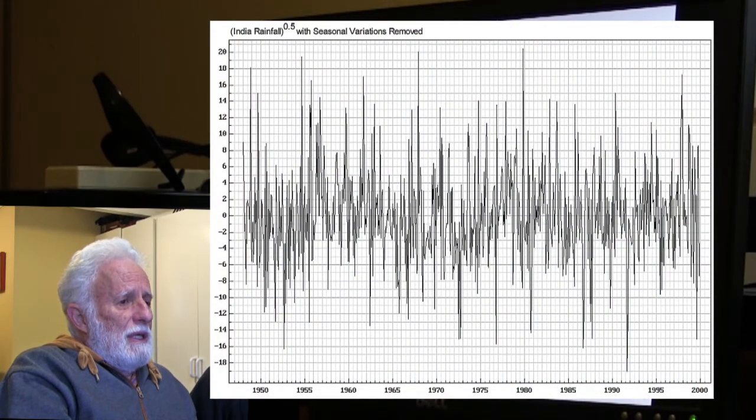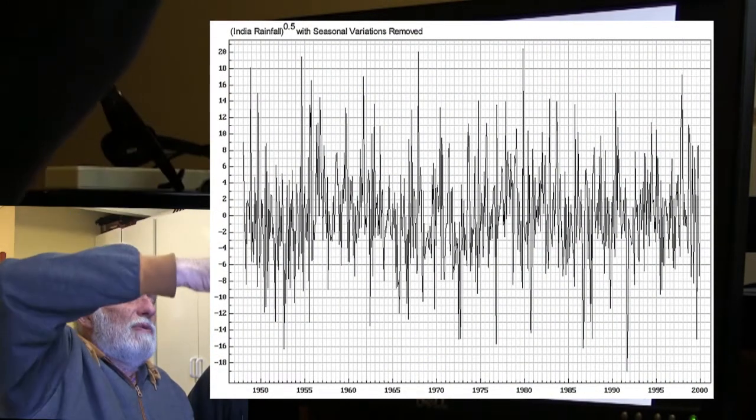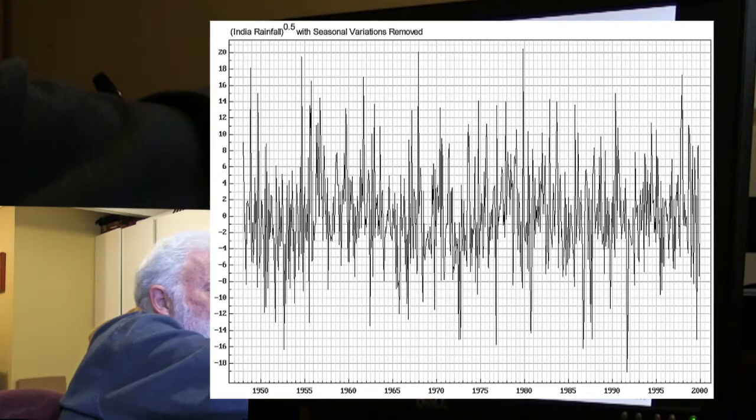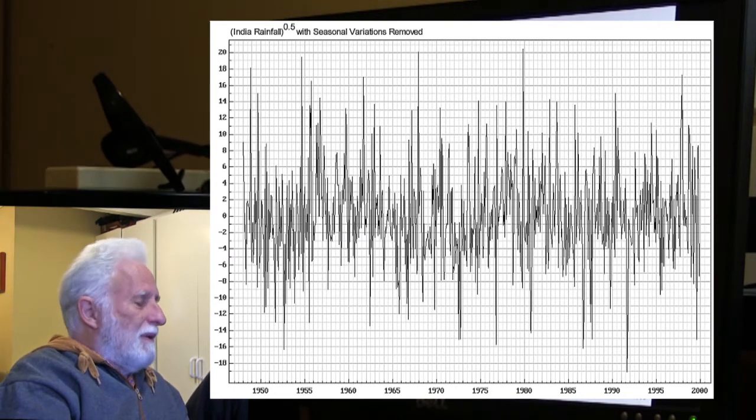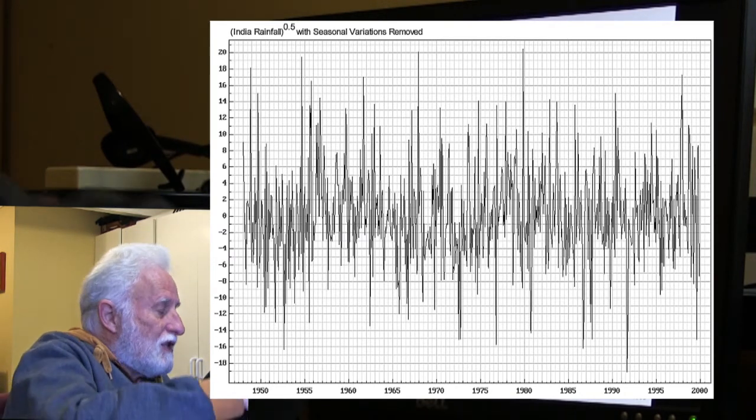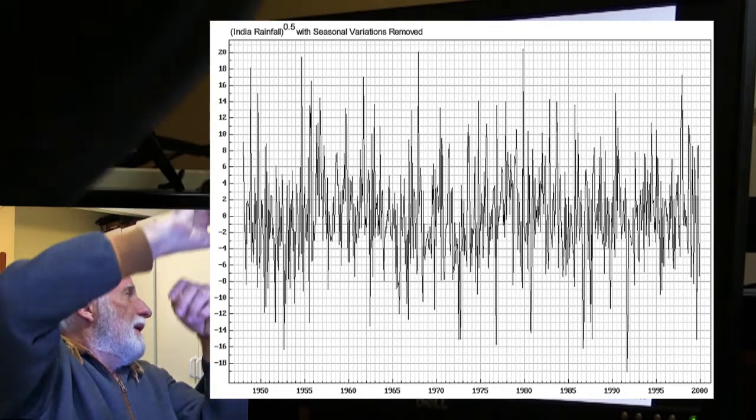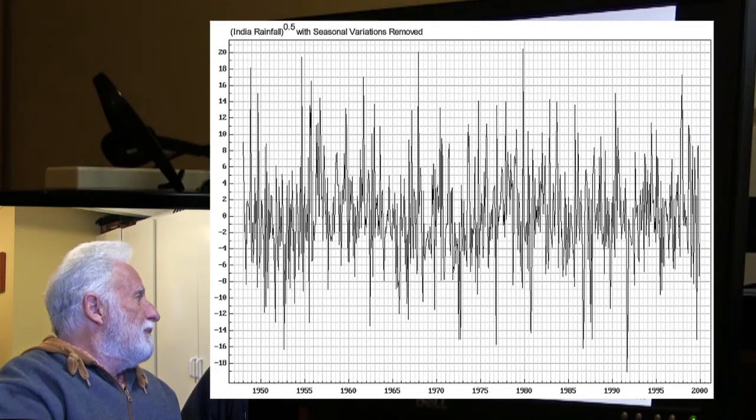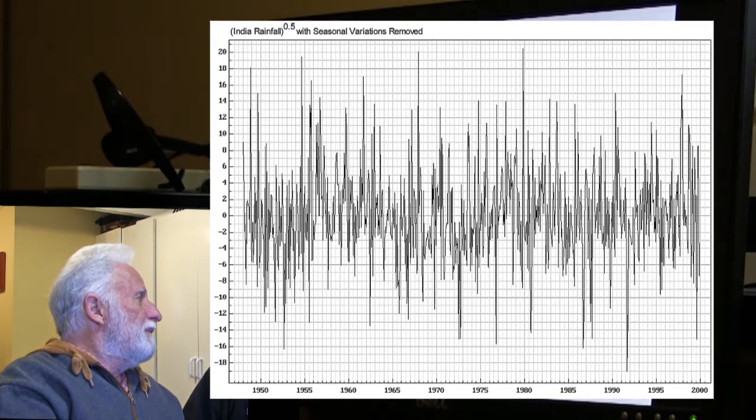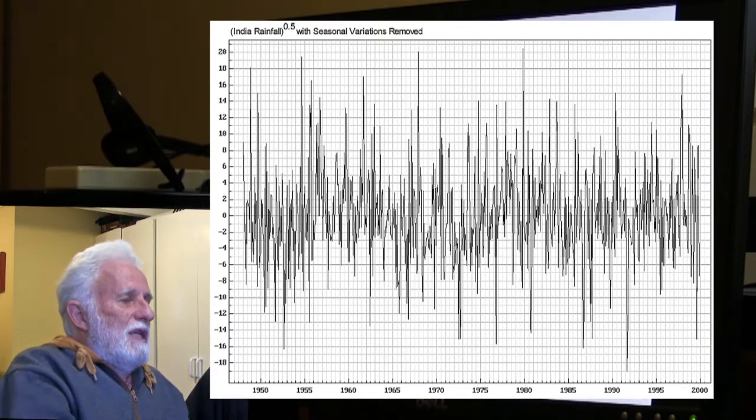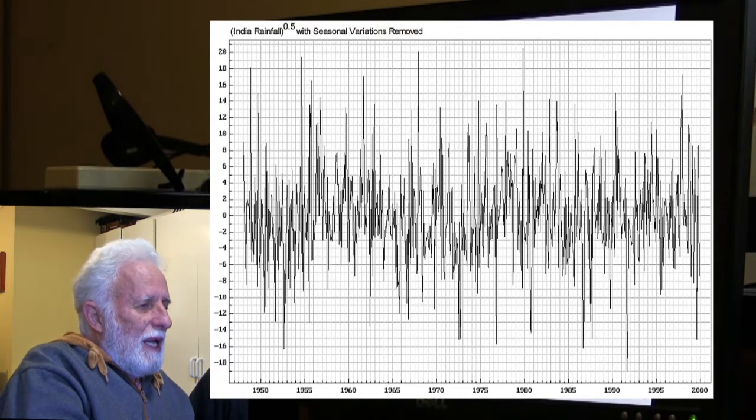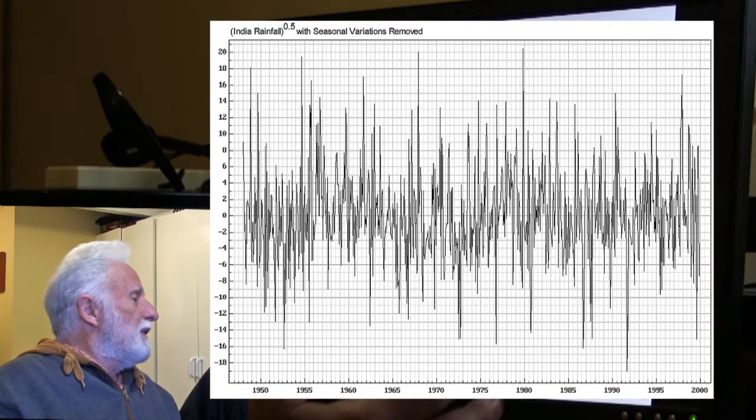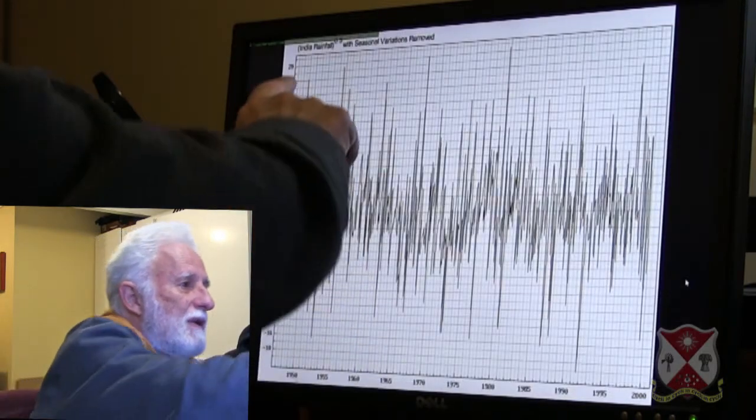Because the cycle is lopsided, the fluctuations when the rainfall is high are much greater than the fluctuations when it's low. I've taken the square root of the rainfall. That has the effect that the lower end gets expanded and the upper end gets compacted. So it becomes more of similar fluctuations at the high and low end. This process allows us to look at shorter-term cycles that may be passing right through the seasons that exist. So that's the first step.